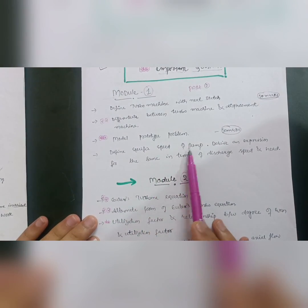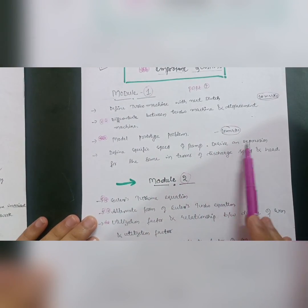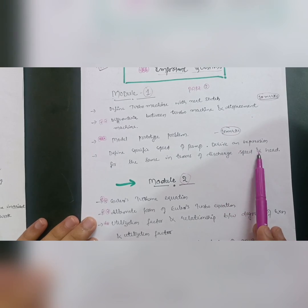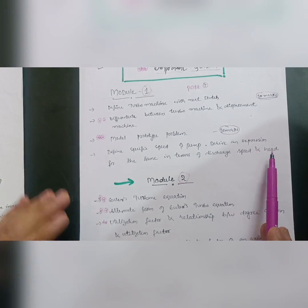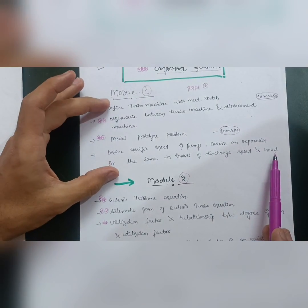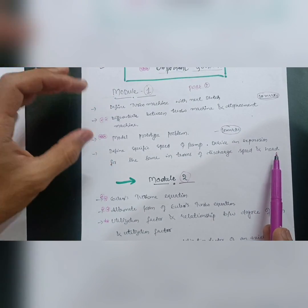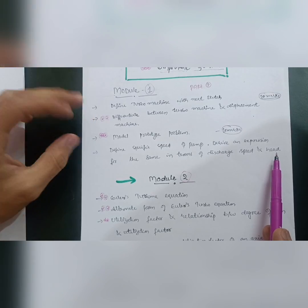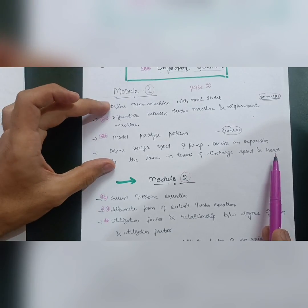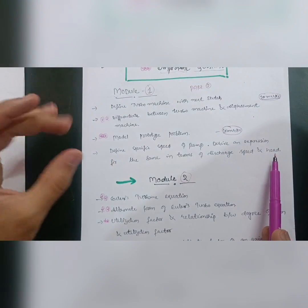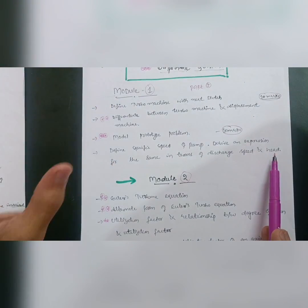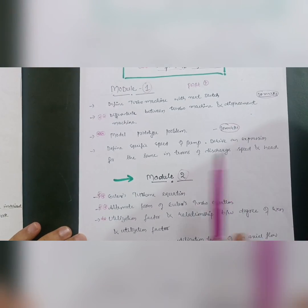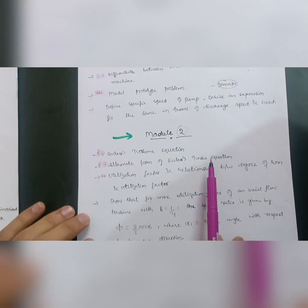In Module 1, also focus on: define specific speed of a pump and derive an expression for the same in terms of discharge, speed, and head. These four topics in Module 1 will allow you to easily score 10 marks in this particular module.